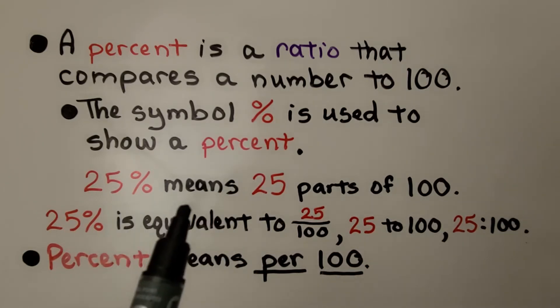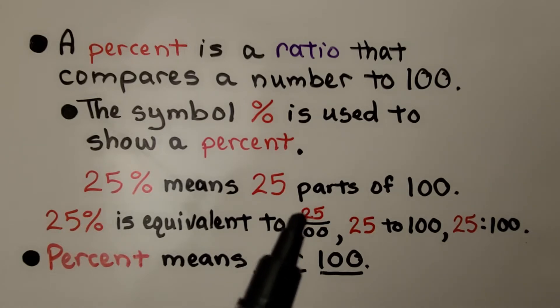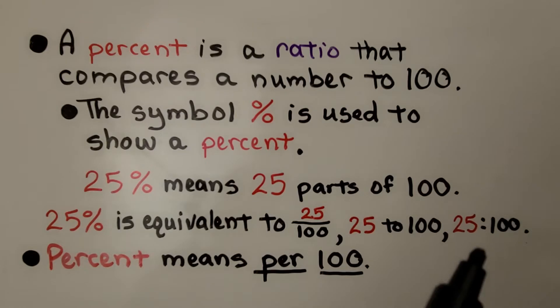25% means 25 parts of 100. 25% is equivalent to 25 hundredths as 25 to 100 and we can write it as a ratio as 25 to 100. Percent means per 100.